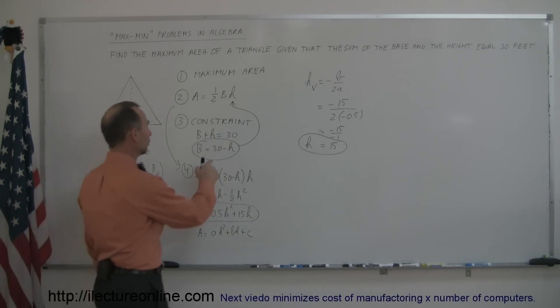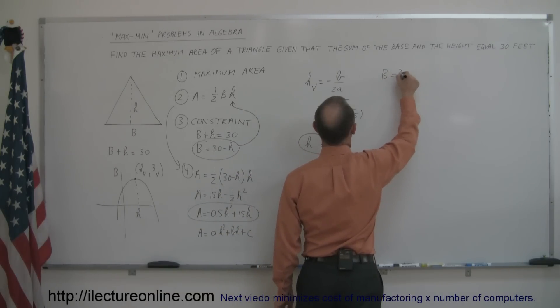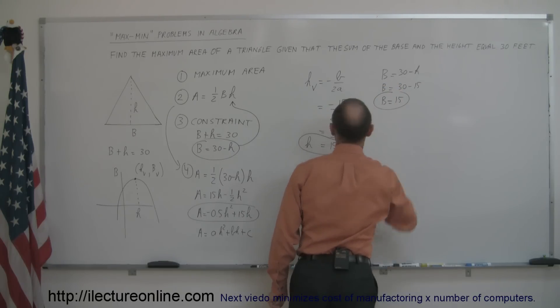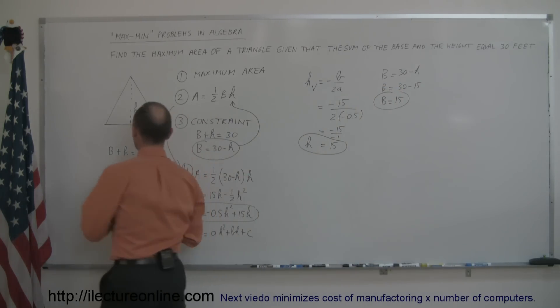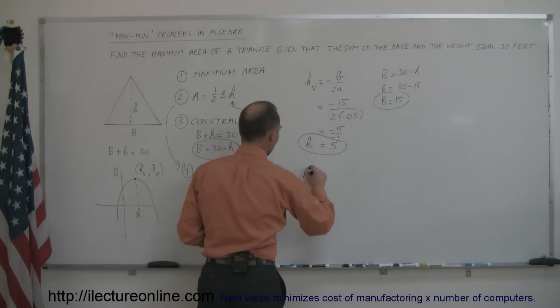Now if h is 15, we plug the constraint in here, we get b equals 30 minus h, and since h is 15 we can also see that b must also be 15. So in other words, if the sum of the base and the height is equal to 30 feet, the largest area triangle that can be made is made when you let h be equal to 15, and the base equal to 15.